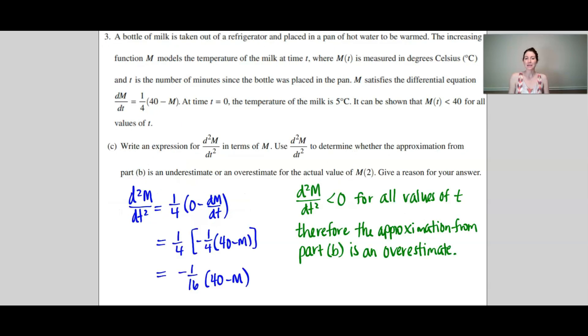Now for Part C. In Part C we need to find the second derivative and then we're going to use that second derivative to determine whether the approximation from Part B was an over or underestimate. So to find the second derivative, well 1/4 is just a constant so let's leave that out in front. The derivative of 40 is 0 and the derivative of M is dM/dt in this case.